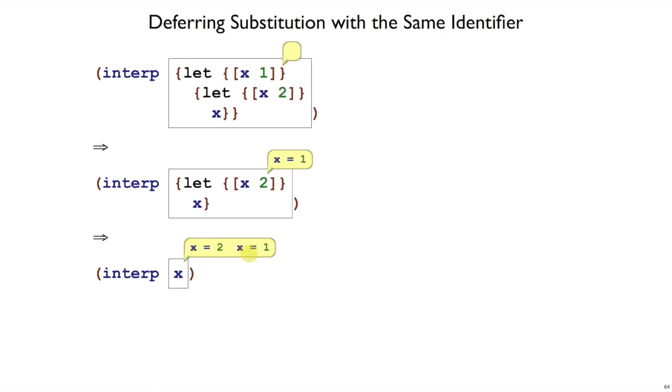But if instead of keeping this information as a set, we keep it as a list, then we can always start at the beginning of the list and that turns out to be the right answer. The closest binding to x is going to be the most recent decision of a substitution.